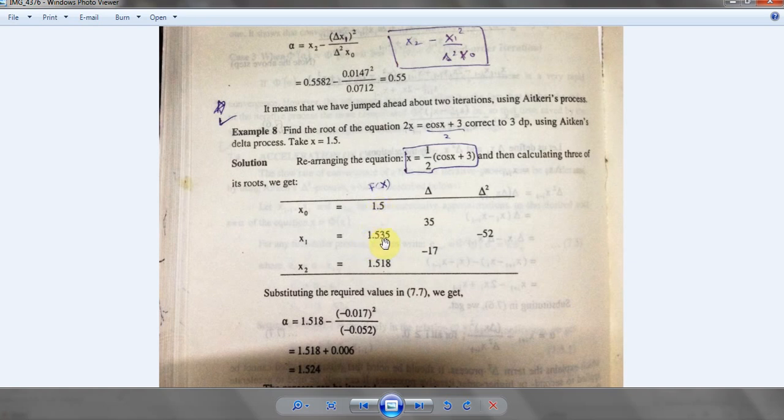We're gonna minus 1.5 from 1.535 and we will get 0.035. Same thing, we're gonna just subtract 1.518 from 1.535, we get minus 0.017 or minus 0.017. Same thing we're gonna do, we're gonna substitute this term from this one, we'll get minus 0.052.